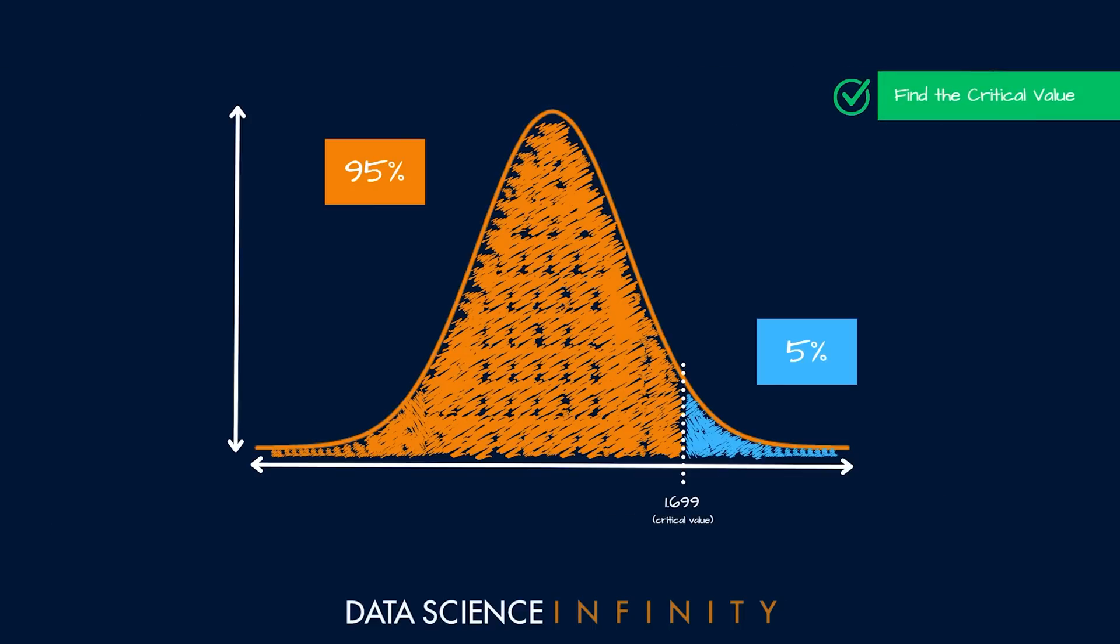This critical value is the point that splits the area under the distribution curve by our acceptance criteria of 0.05, giving 5% of the area on one side and 95% of the area on the other. Since we are interested in the right hand side of the distribution, we take this as positive 1.699, and we can do this because a t-distribution by definition is symmetrical. That is step one of three complete.